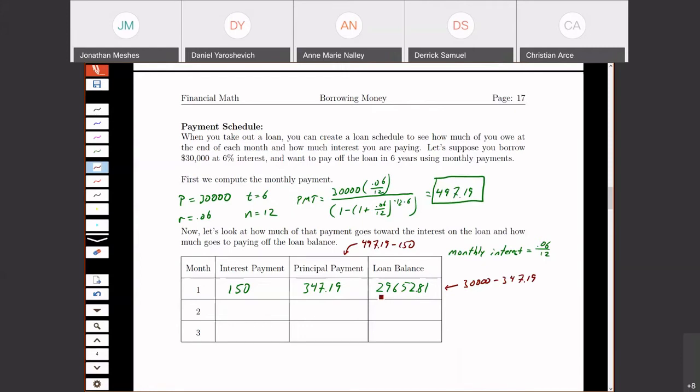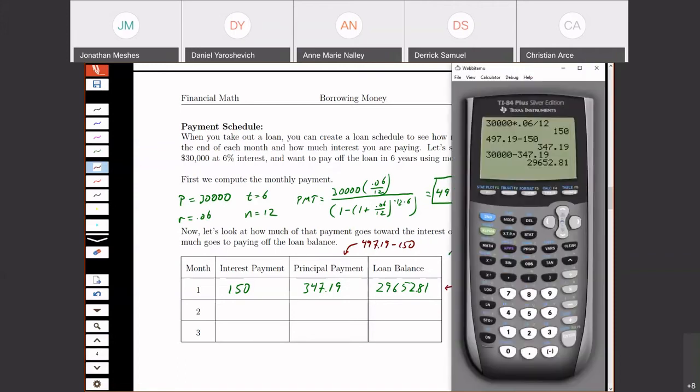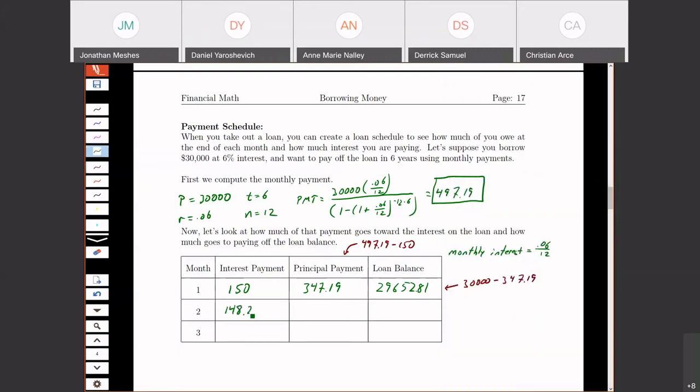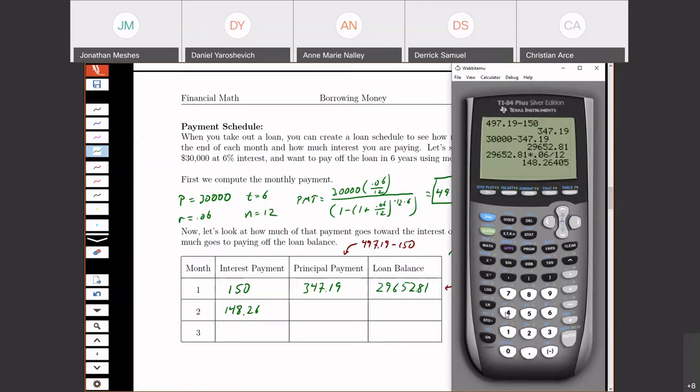Now when we go to month two, I'm going to start with my last month's loan balance and apply the interest to that. So we take this $29,652.81 and multiply it by 0.06 divided by 12. That was our monthly interest rate. So here I'm paying slightly less in interest, $148.26. So I'm making the same monthly payment each month, right? We're making this $497.19 monthly payment. But now there's slightly less interest to pay off. So I'm actually paying off slightly more of my loan, $348.93.